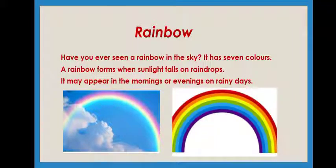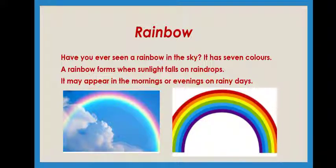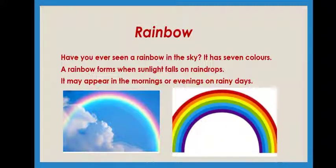Okay, let's learn about the rainbow. Have you ever seen a beautiful rainbow, children? It's very beautiful and when you see a rainbow, it makes you feel so happy and amazed. Do you know why? Rainbow has got seven colors. It has seven colors. A rainbow forms when sunlight falls on raindrops.